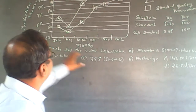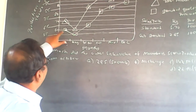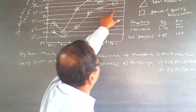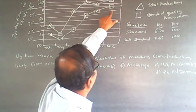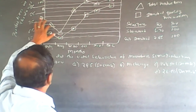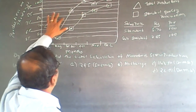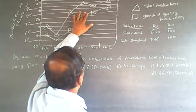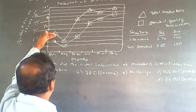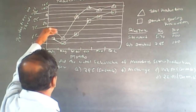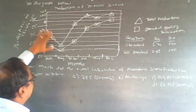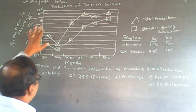As per this graph, the lower graph is for standard quality production, and the top graph is for total quantity. So obviously the total quantity is more than the standard quantity.